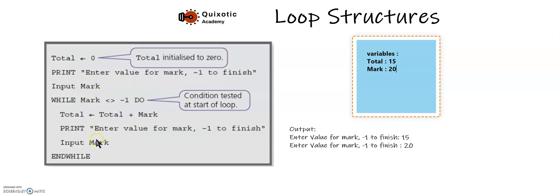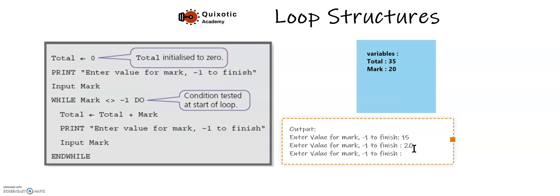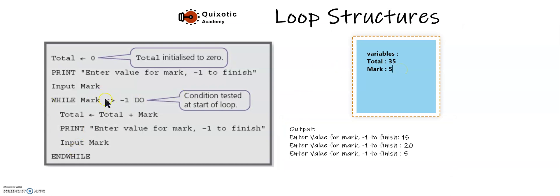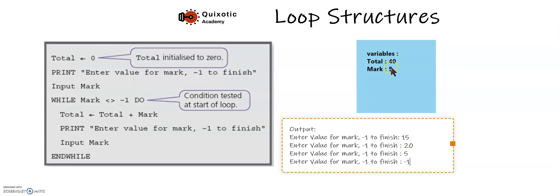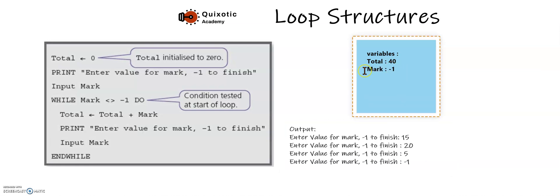Mark is still not equal to minus one so it repeats the process and calculates the total — now total is 35. It asks again and I enter five; five is stored in mark. It checks again — mark is not equal to minus one, so it calculates total, which increases to 40. It asks again and now I say minus one. Mark is now minus one, and when it checks the condition, 'mark is not equal to minus one' is false. So it stops and goes to end while.